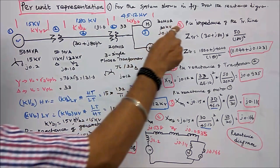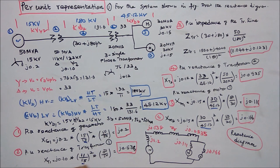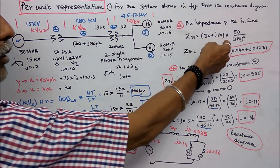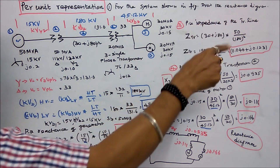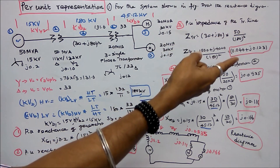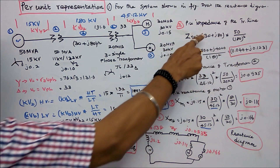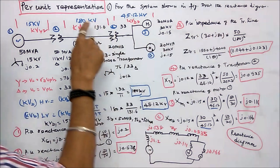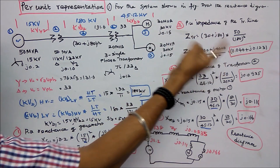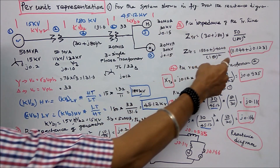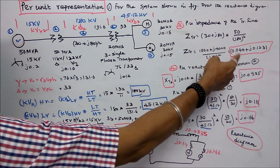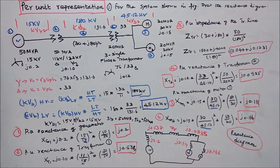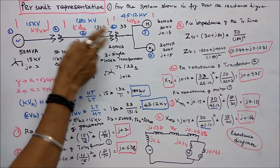The third is per unit impedance of the transmission line. It equals actual impedance times SB2 divided by KVB2 squared. That is (30 + J80) times 50 divided by 180 squared. That equals 0.046 plus J0.123 per unit.